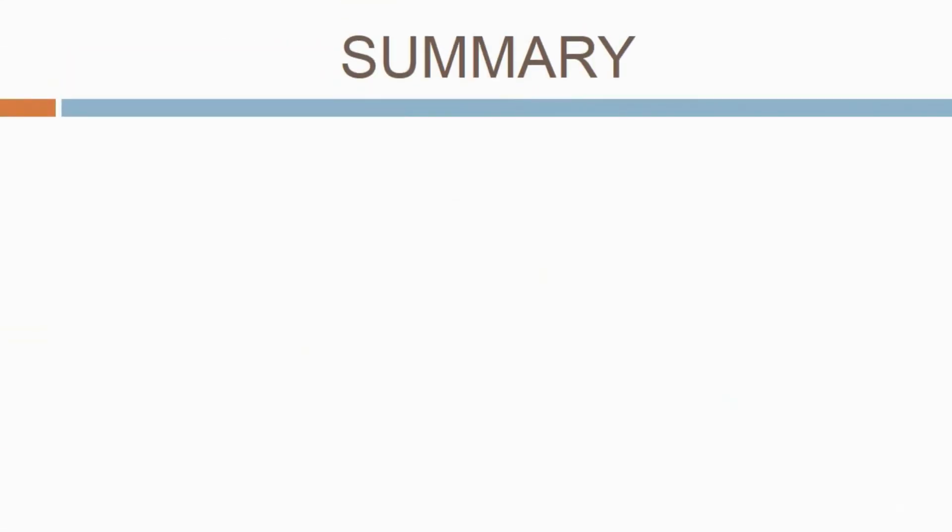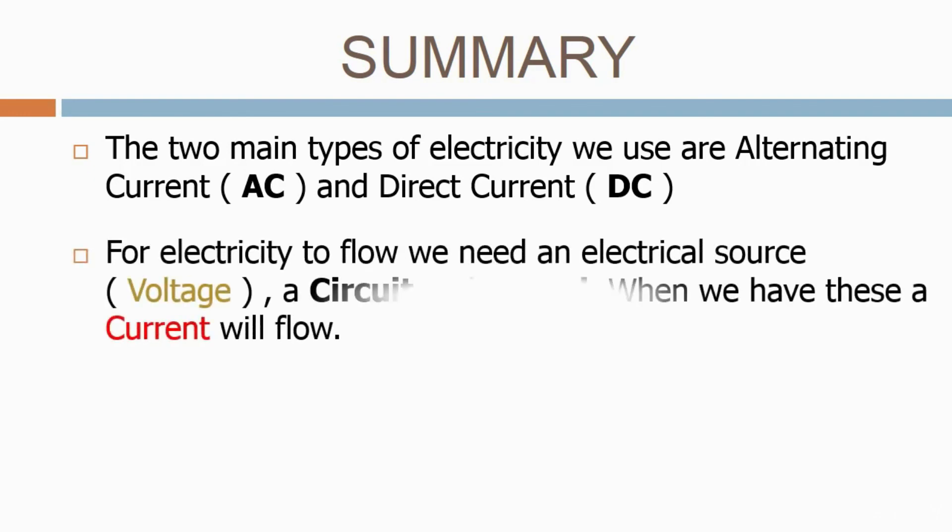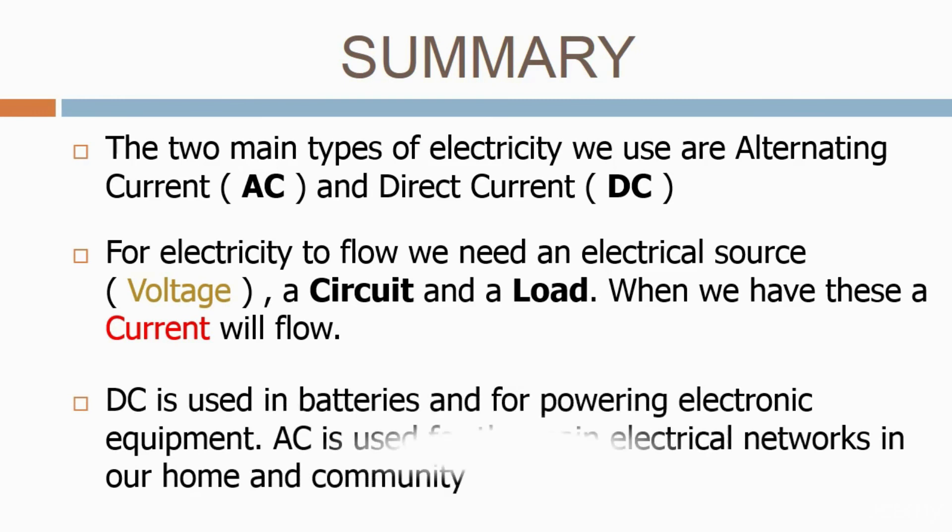Let's now summarize what we've learned today. The two main types of electricity we use are alternating current or AC and direct current or DC. For electricity to flow, we need an electrical source, voltage, a circuit, and a load. When we have these, a current will flow. DC is used in batteries and for powering electronic equipment. AC is used for the main electrical networks in our home and community.